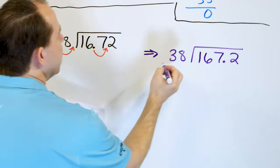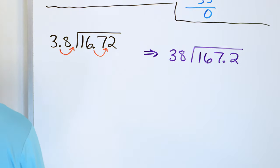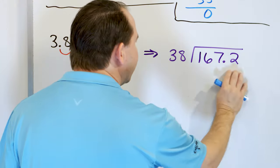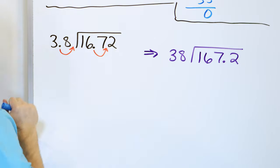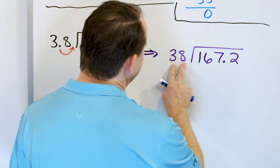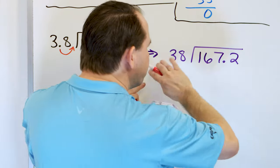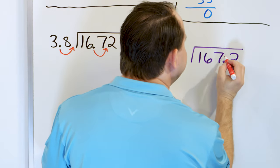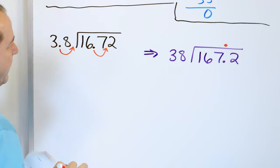That's like multiplying by 10 and multiplying by 10, so we keep everything balanced. The related problem we're actually going to solve is 167.2 divided by 38. Before we do anything else, the decimal point in the answer just floats right above — you can even do that as the first step.